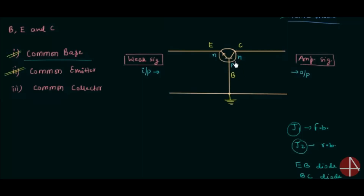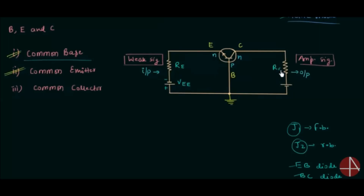We can consider a transistor as two diodes connected back to back. Diode EB is forward biased and diode BC is reverse biased in active mode. I will forward bias EB — let's say this resistance is RE. Emitter is N-type material and base is P-type material, so emitter is connected to the negative terminal and base is connected to the positive terminal; I will call this forward biasing potential VEE. Now I will reverse bias diode BC — this resistance is RC. Collector is N-type material and base is P-type material, so collector is connected to the positive terminal and base to the negative terminal. I will call this reverse biasing potential VCC.